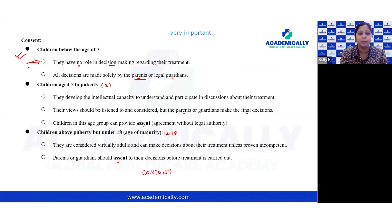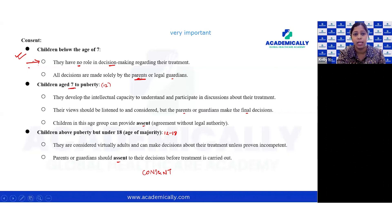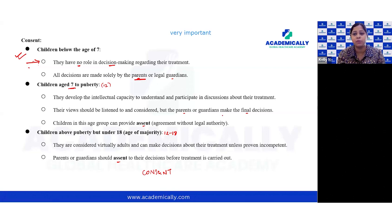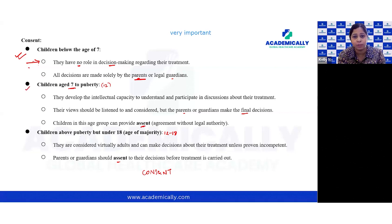Children from age seven to puberty have developed some intellectual capacity to understand and participate in treatment discussions, so their view should be listened to and considered, but the parents still make the final decision. Children between the age of seven to puberty can assent to treatment — that is, give agreement — but it is not legally binding. Only the parent can give the final legally binding consent.